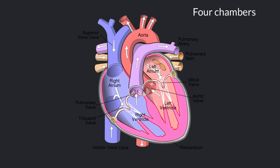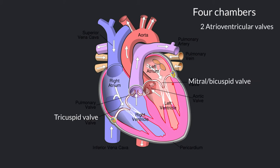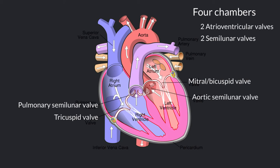The heart also has several valves that allow blood to flow through the heart in the right direction. There is the tricuspid valve, also known as an atrioventricular valve, located between the right atrium and the right ventricle. Another atrioventricular valve called the mitral valve or bicuspid valve is found between the left atrium and the left ventricle. Then there are two semilunar valves: the pulmonary semilunar valve going from the right ventricle to the pulmonary trunk, and the aortic semilunar valve going from the left ventricle into the aorta.